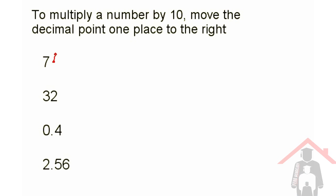Now I move it one place to the right. There's nothing under here, so it needs to be a zero, so I'm going to write 70. And because the point is now at the end of the number, I don't write it.